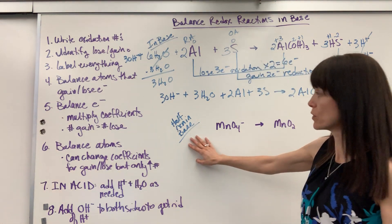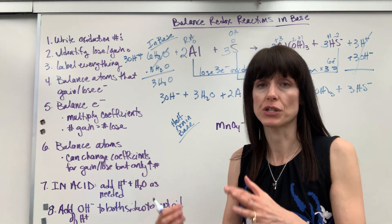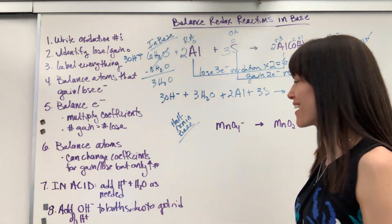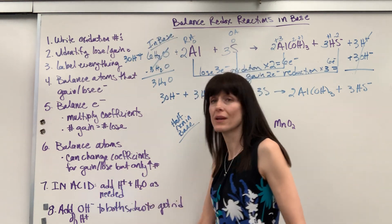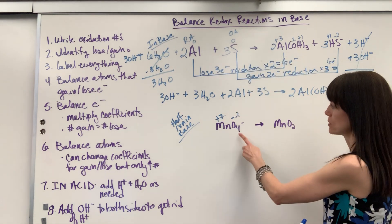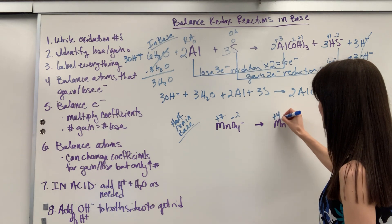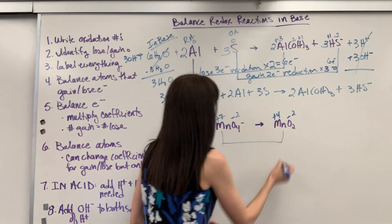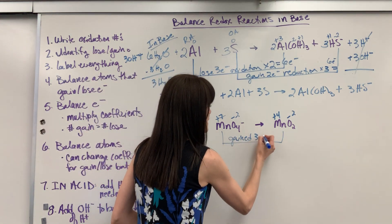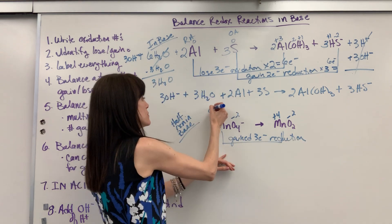Now I want to show you another example. Every once in a while you'll be asked to balance a half reaction in base. A half reaction only shows half of the redox — it's either going to show the reduction part or the oxidation part. Full reactions must have something reduced and something oxidized. Let's do this one, following all eight steps. Number one: write the oxidation numbers. We have minus two, which makes manganese a plus seven — minus two times four is minus eight to equal minus one, so manganese has to be plus seven. Minus two times two is minus four, so manganese must be plus four here. Manganese is going from plus seven to plus four, which means it gained three electrons. GER — gain electrons, reduction. Whatever's reduced is the oxidizing agent.